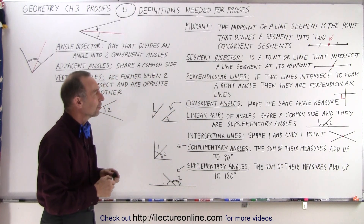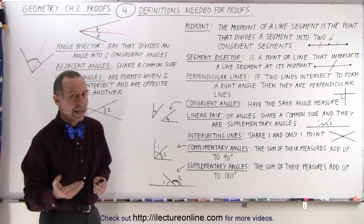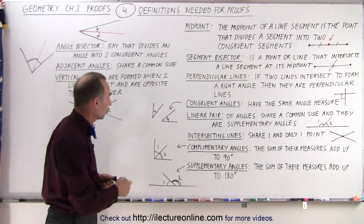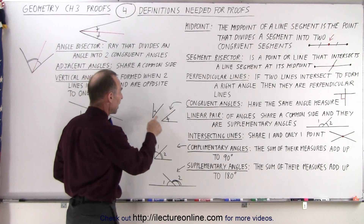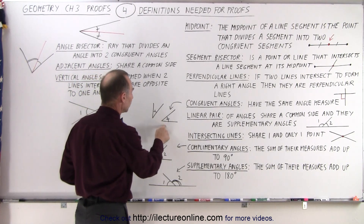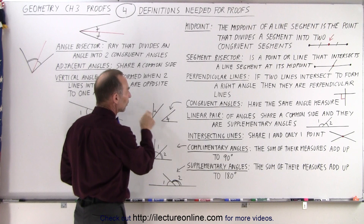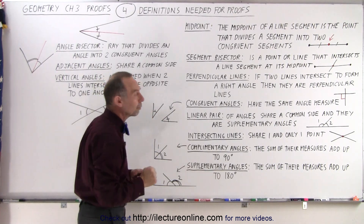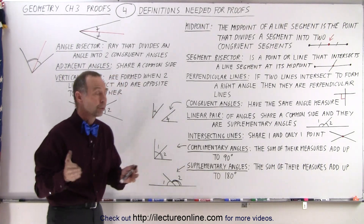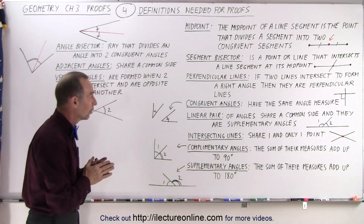Congruent angles have the same angle measure. Here we have two angles, they have the same measure indicated by that little symbol, which means that those two are what we call congruent angles.